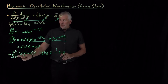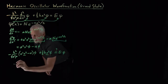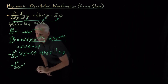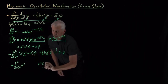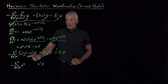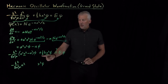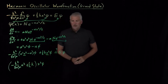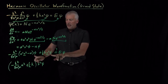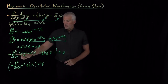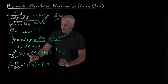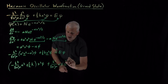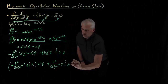The first collected term is negative h squared over 8 pi squared mu times alpha squared, multiplying x squared and the wave function. There's another term that also multiplies x squared and the wave function: plus one-half k, also multiplying x squared and the wave function. Additionally, negative times negative leaves a positive sign: h squared over 8 pi squared mu times alpha times the wave function. All that should equal energy times the wave function.